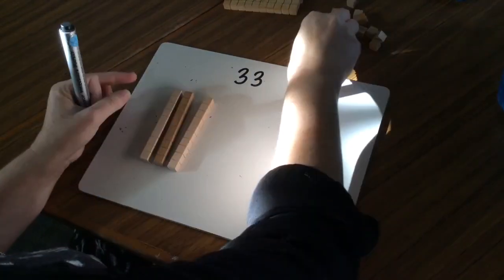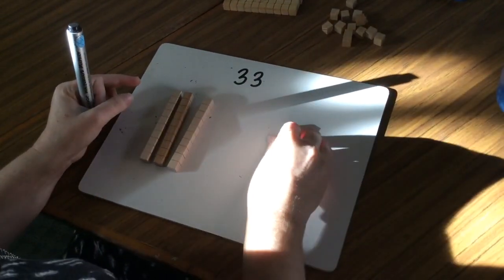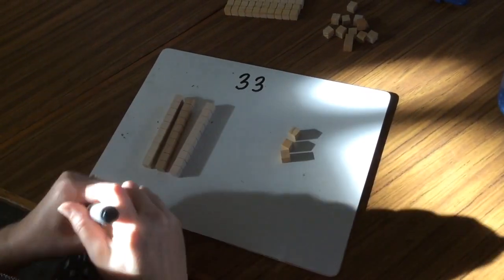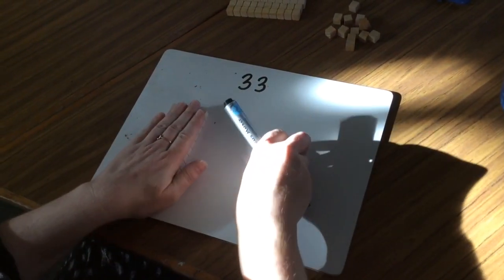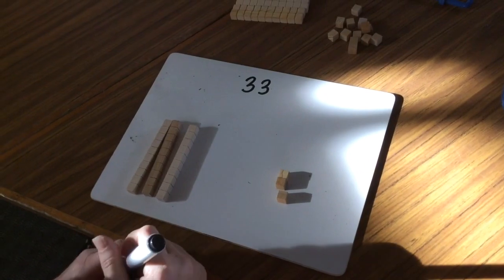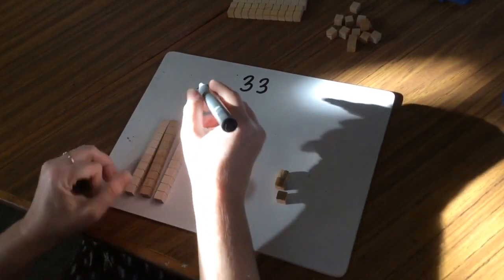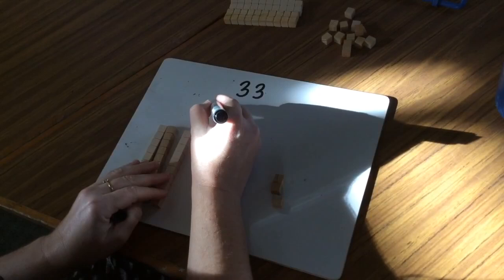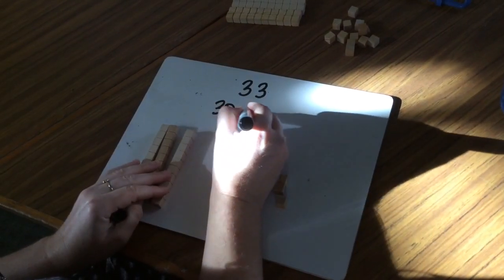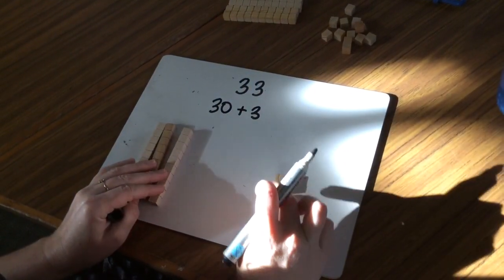I can break it up in standard form. We call it standard form when we look at the tens and the ones, so I can say 10, 20, 30 plus 1, 2, 3.